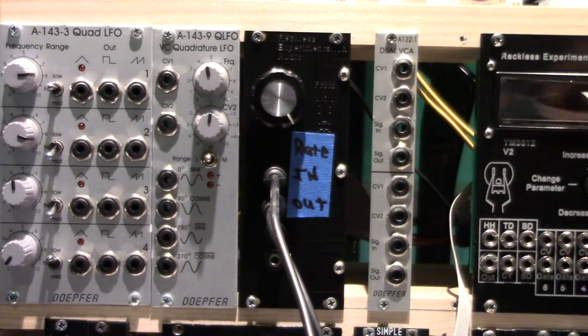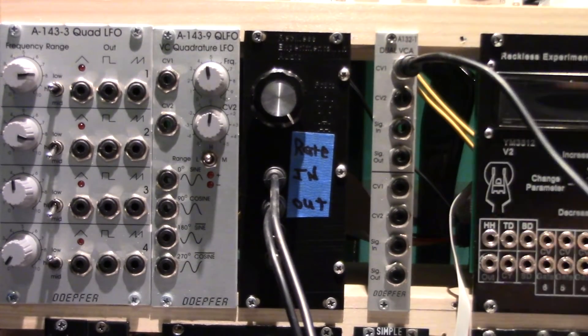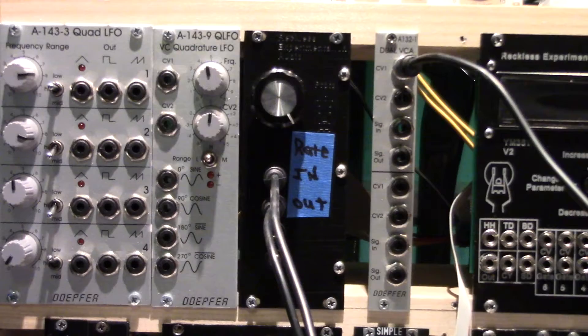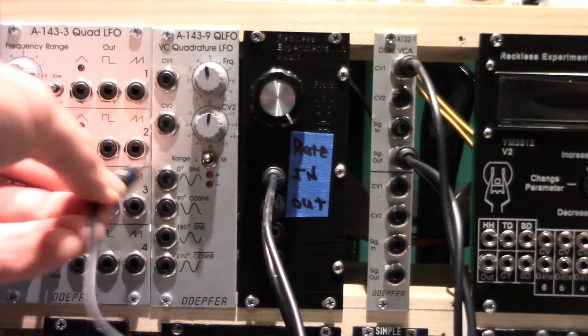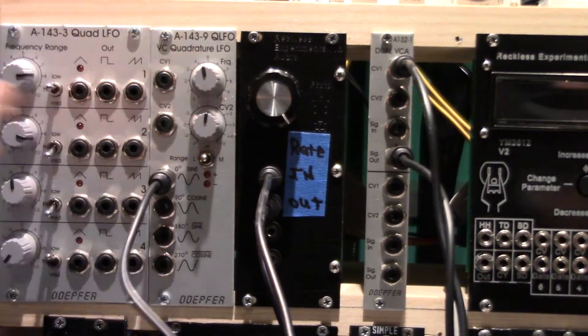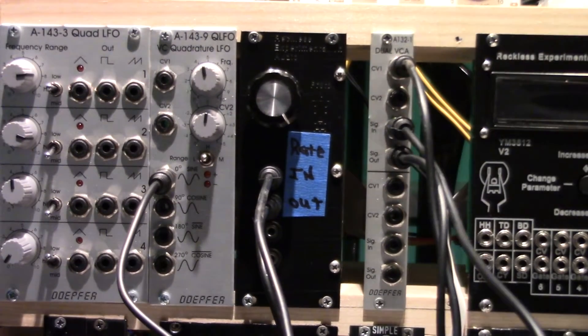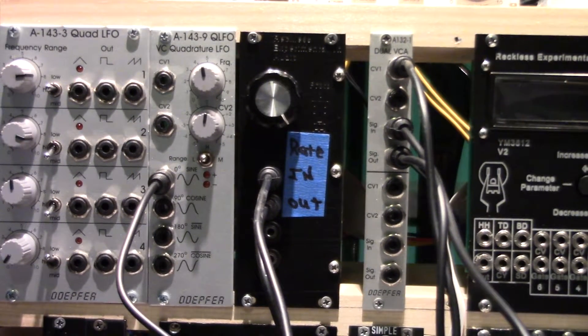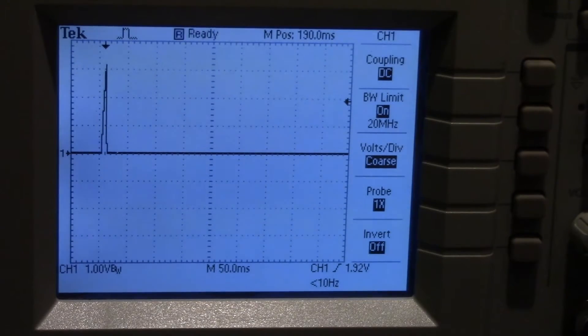Connect up the inputs and outputs. Today we are going to use a trigger pulse generator, a Doepfer A-143-9 for our signal source, the Proto-1 to generate the envelope, and a Doepfer A-132-1 for the voltage controlled amplifier. First, let's look at some scope traces of the generated envelope.